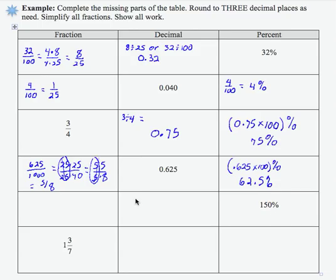150% is 150 out of 100 as a fraction. If I reduce that, I get 1 and 50 over 100, which is 1 and 1 half. As a decimal, if I divide 150 by 100, I get 1.5.